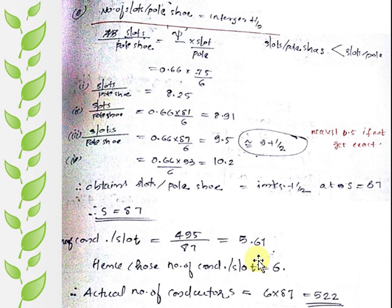Then find number of conductors per slot like this, we will get it as 6. Then to find actual number of conductors, multiply it by 87.